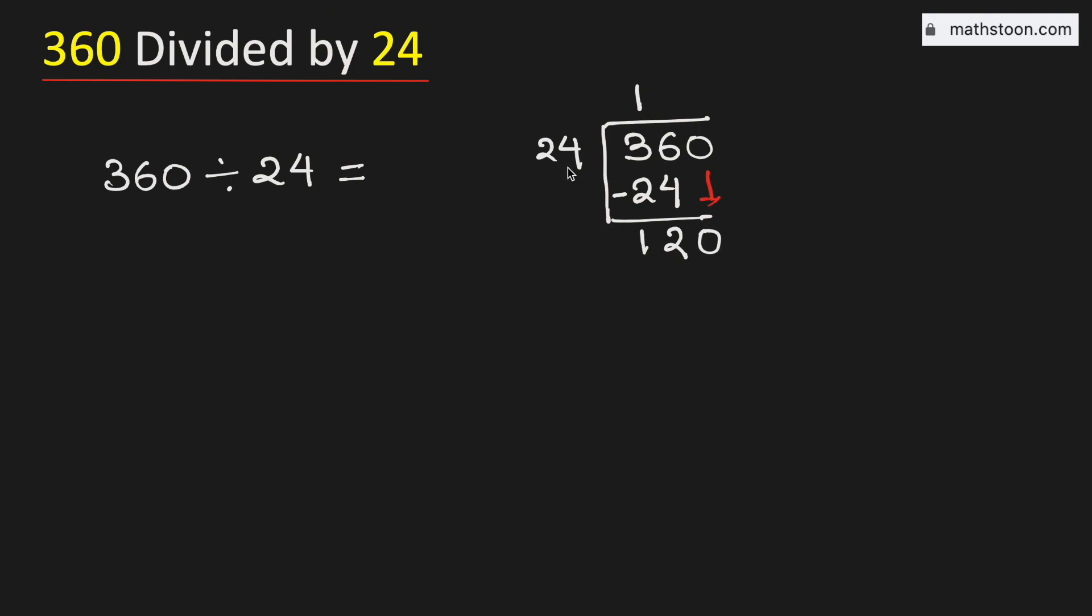Now again we know that 24 times 5 is 120. Subtract we get 0.